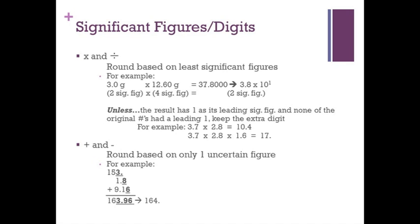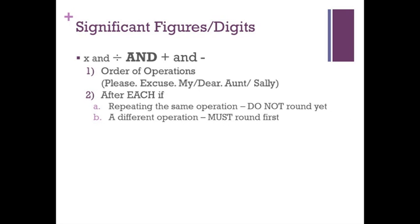For addition and subtraction, the answer can only have one uncertain figure. So if you look at the example set here, 153 plus 1.8 plus 9.16, we have 3 uncertain figures. So we would round it to only one uncertain figure. If you encounter a problem that uses both multiplication, division, and addition and subtraction, you follow the order of operation. Please excuse my dear Aunt Sally, which basically means parenthesis, exponent, multiplication, and division, then addition and subtraction. After doing each step, if the next step is the same operation group, don't round yet. But if it is a new group, you are switching from multiplication to addition, then round before you complete the next step.